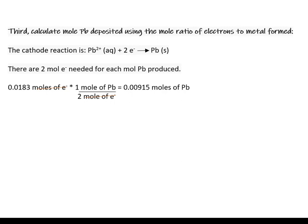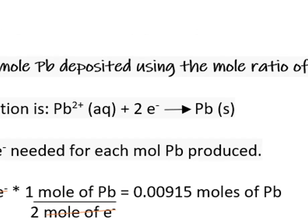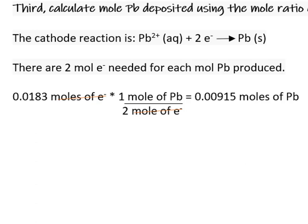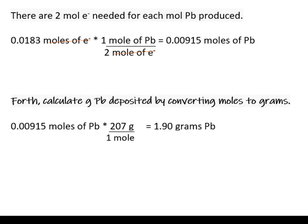Let's look at the half-reaction for the reduction of lead two ion to lead solid. For every one mole of lead ion, two moles of electrons are required. So we're going to use the 0.0183 moles and divide that amount by two to get the moles of lead. Finally, we convert the moles of lead deposited to grams of lead.